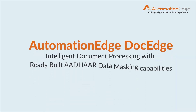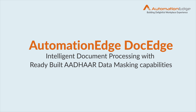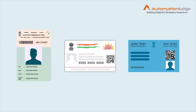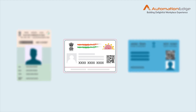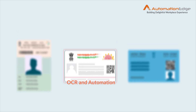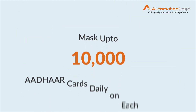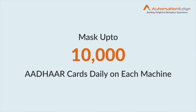How can Dock Edge help? Dock Edge is an advanced, intelligent document processing solution with ready-built Aadhaar data masking capabilities. When a customer shares a document, Dock Edge can automatically identify if the shared document is an Aadhaar card or not. Once confirmed, Dock Edge can mask the sensitive information as per your requirement using OCR and automation capabilities. With its high speed, it can mask up to 10,000 Aadhaar cards daily on each server machine.